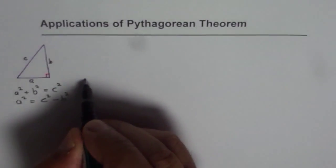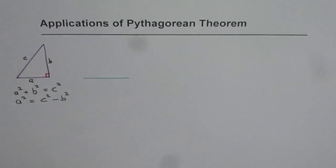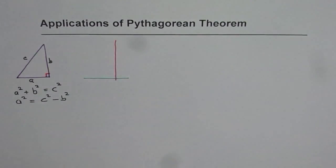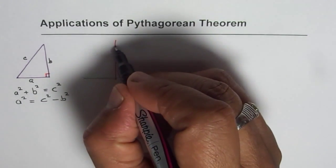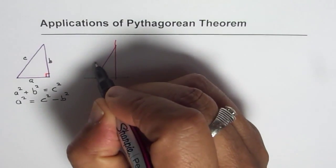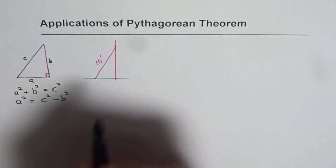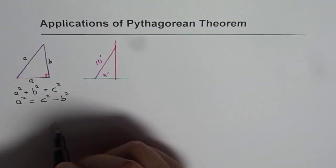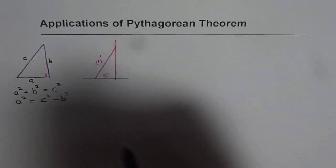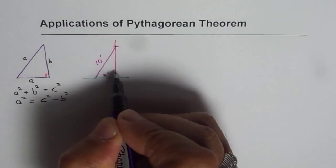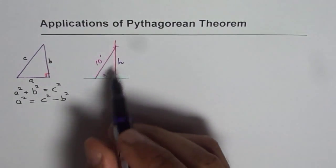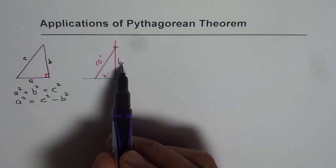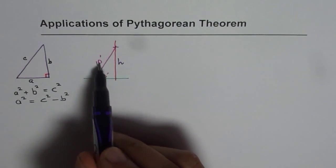For example, there could be a problem saying that you have a ladder which is let us say 10 feet long and the safe distance is let us say 3 feet. Then what is the maximum height a ladder can reach? That could be a problem where height will be square root of difference of squares between the given sides.